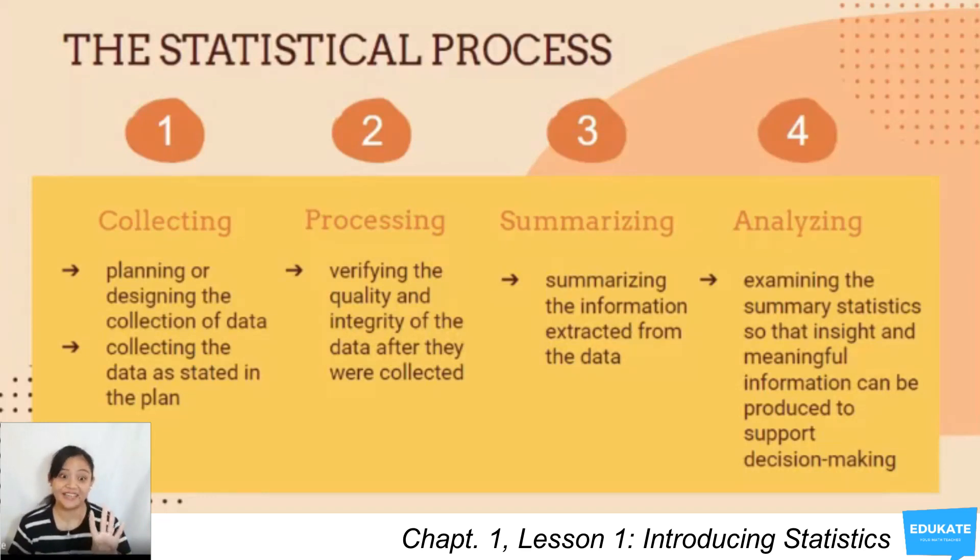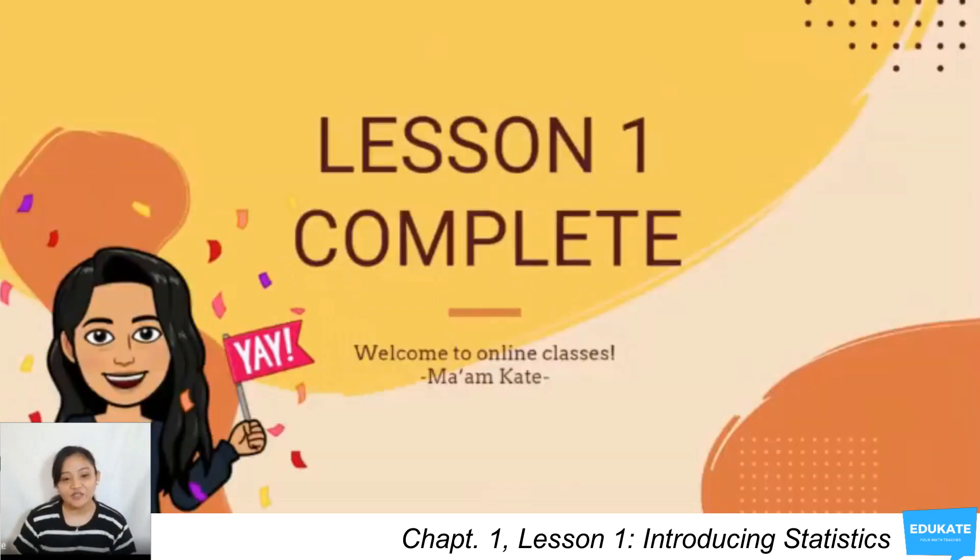Next we have analyzing. Analyzing is examining the summary statistics—analyzing your table or analyzing your graph—so that insightful and meaningful information can be produced to support decision-making. After analyzing, we can now answer the question 'Do dogs eat more than cats?' by using our four-step statistical process.